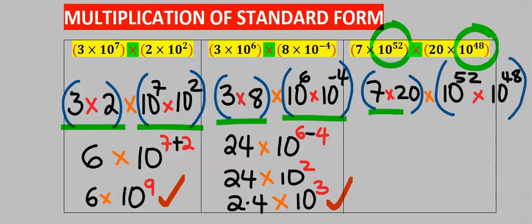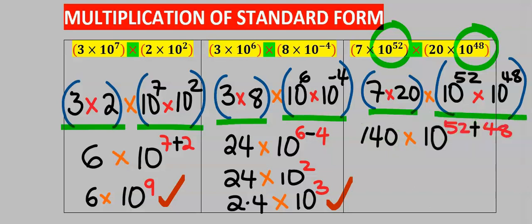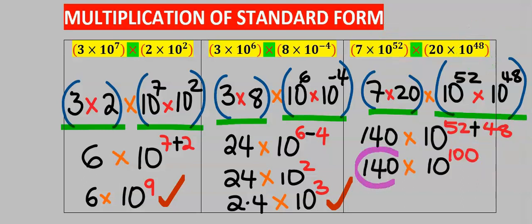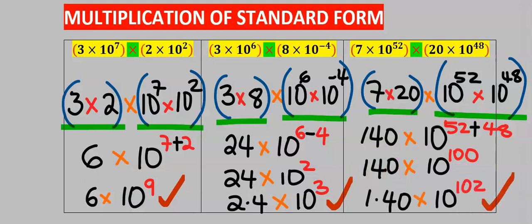Seven times 20 gives you 140. Next, we apply the law of indices and add the powers. Since 140 is greater than 10, I move the decimal two places to the left to get 1.40, and increase the power by 2. That is our answer.